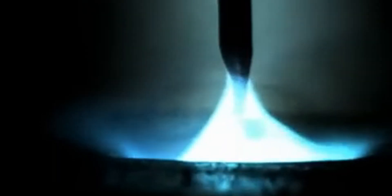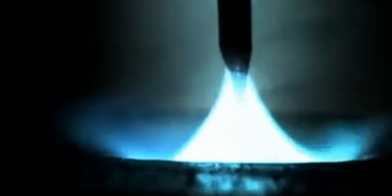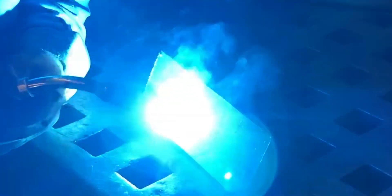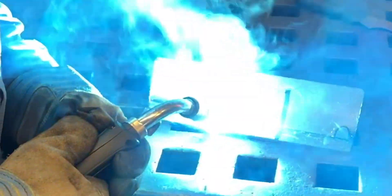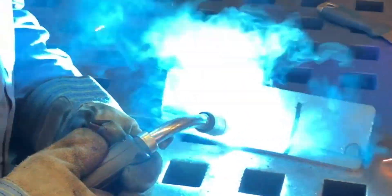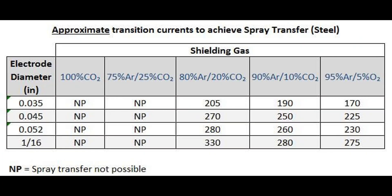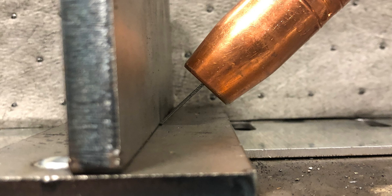These gas compositions provide a stable medium for the smooth transfer of those fine metal droplets. Typical shielding gas mixes include 90% argon with 10% carbon dioxide and 95% argon with 5% oxygen. However, any mix containing at least 80% argon will suffice. As the percentage of argon in the shielding gas mix increases, the transition current decreases. As you can see from this chart, the specific current at which spray transfer is achieved varies depending on electrode diameter and shielding gas composition. Factors like contact tip to work distance also play a role, influencing the actual amperage.